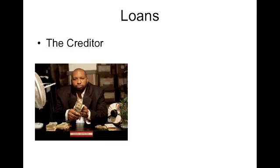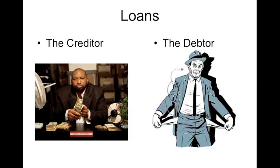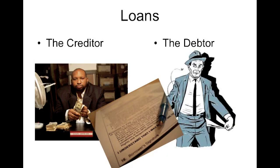The creditor is the one who's going to loan the money out. The debtor is the one who's borrowing the money. They sign a contract with a certain interest rate on the loan. In the example you saw, it was a fixed interest rate, so that 5% didn't change over the year that the money was borrowed.